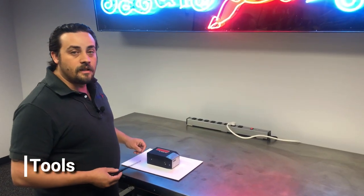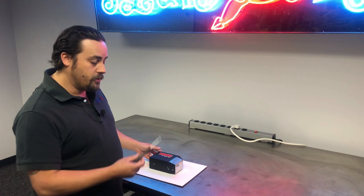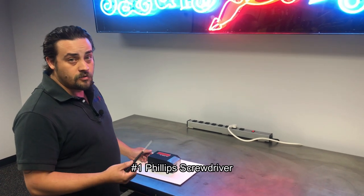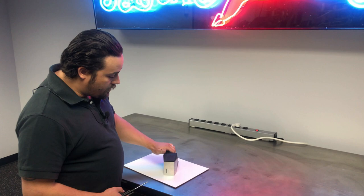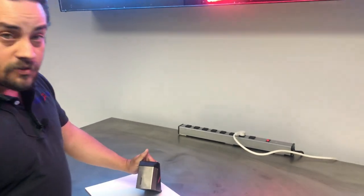To gain access into the inside of the Co-Pilot 128 printhead, you're going to need a number one Phillips screwdriver. The first thing you're going to want to do is remove the stainless steel nozzle plate cover.